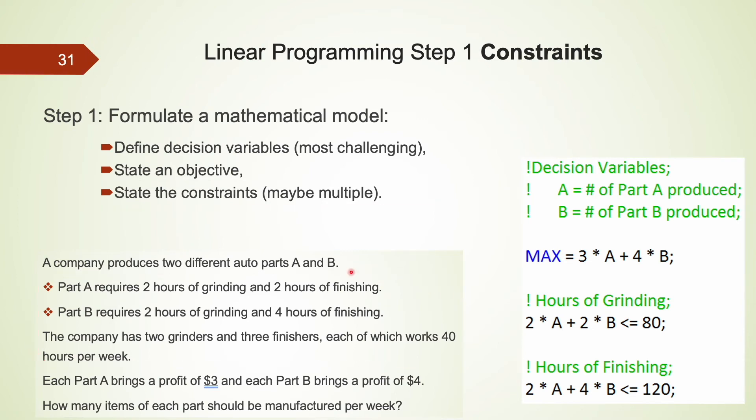We now have translated the original business problem into a mathematical model. The model includes two decision variables, one objective function, and two constraints. This model is ready to be entered into a linear programming solver to find the optimal values of A and B that maximize the objective function. We are now done with step 1.